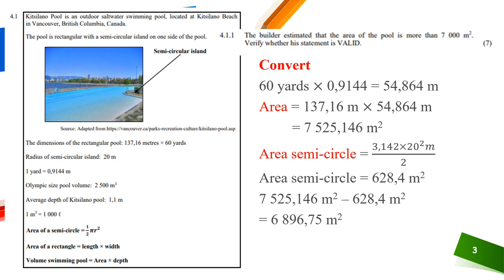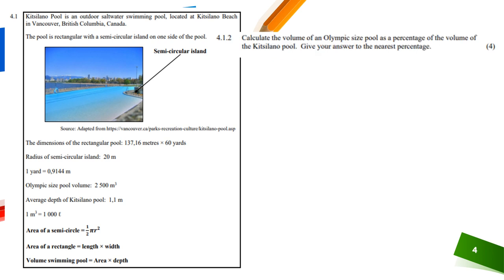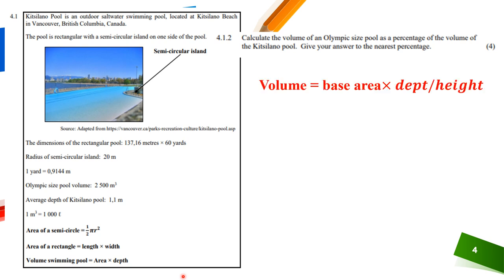Then calculate the volume of an Olympic-sized pool as a percentage of the volume of the Kitsilano pool, to the nearest percentage. First, work out the volume of the Kitsilano pool — volume equals base area times depth or height. The Olympic-sized pool volume is provided; the Kitsilano pool volume must be calculated first.